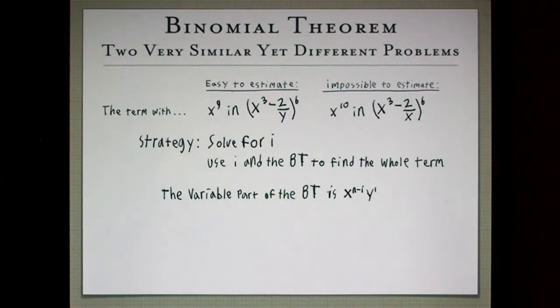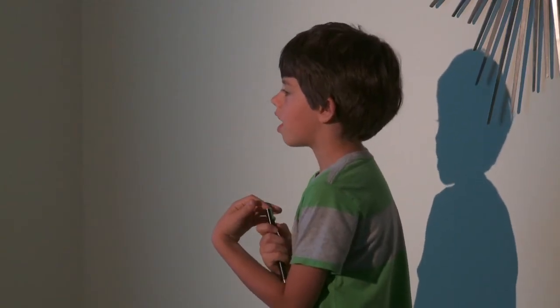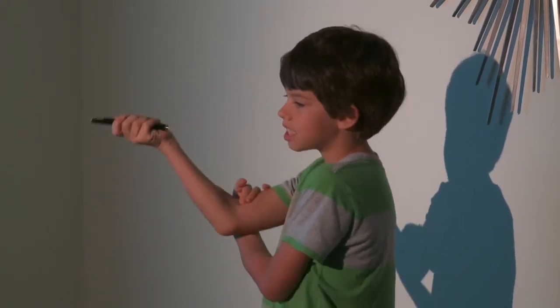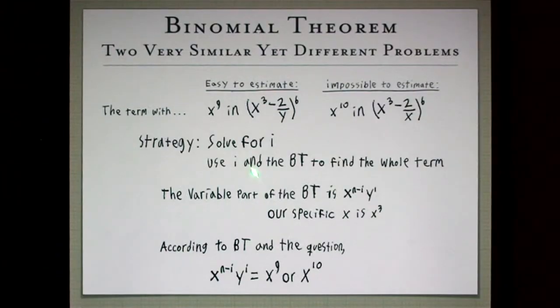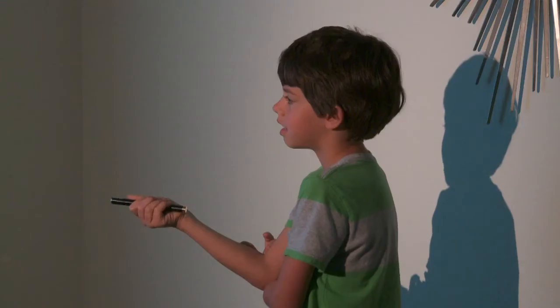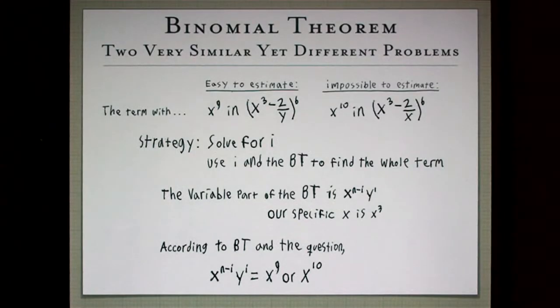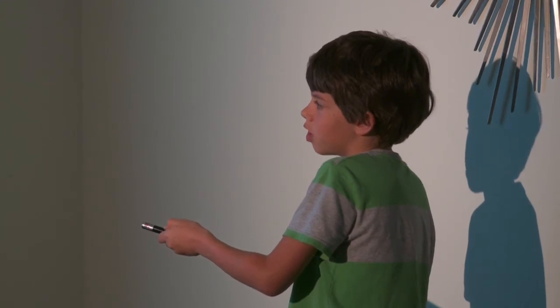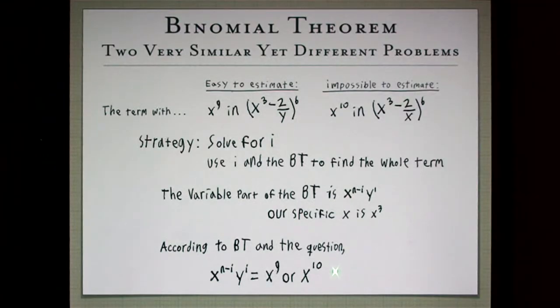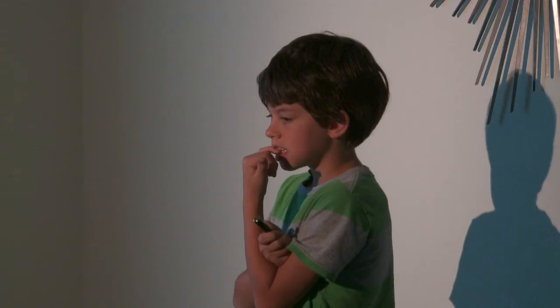The variable part of the binomial theorem is x to the n minus i, y to the i. And our specific x is x cubed. So we know that x cubed to the something has to equal x to the 9th. And that something is going to be n minus i. And so the only possibility is 3. So 3 is n minus i or 6 minus i. So therefore we know i has to be 3 and the term number is 4. That's the easy one, which is even complex explaining the easy one.